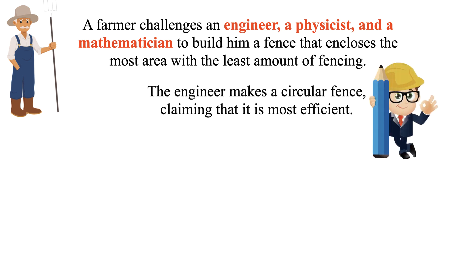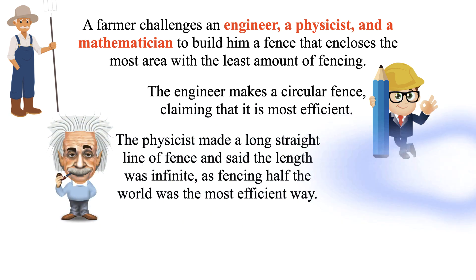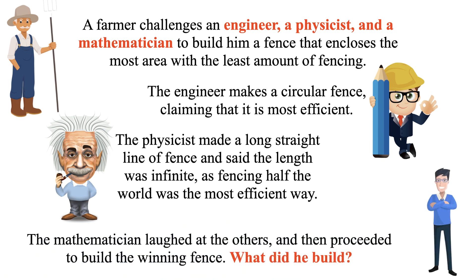The engineer makes a circular fence claiming that it is most efficient. The physicist made a long straight line of fence and said the length was infinite, as fencing of the world was the most efficient way. The mathematician laughed at the others and then proceeded to build the winning fence. What did he build?